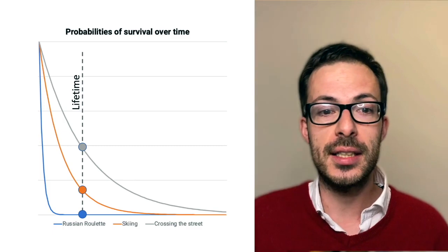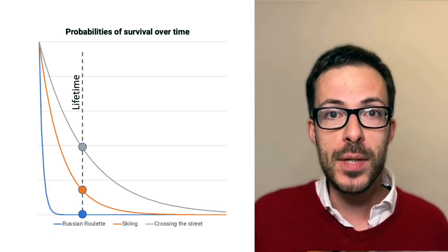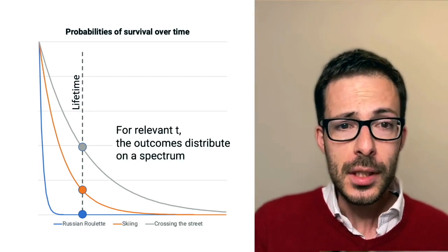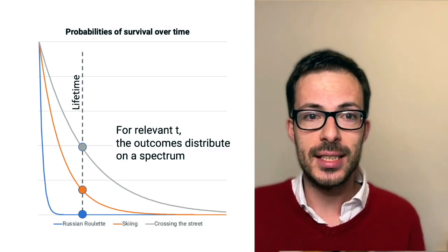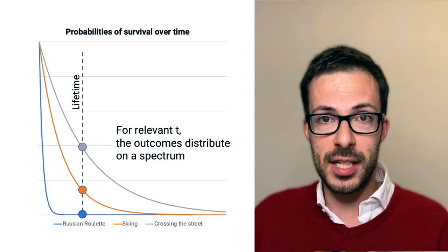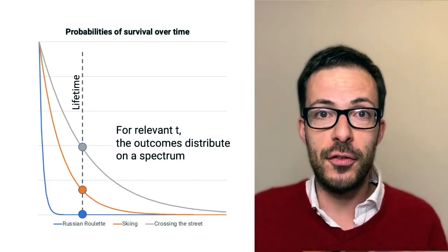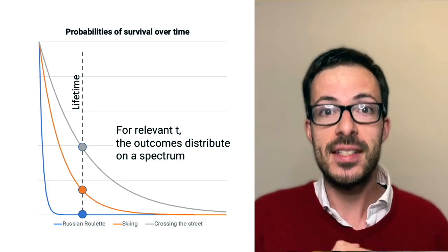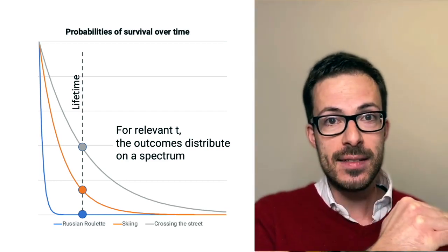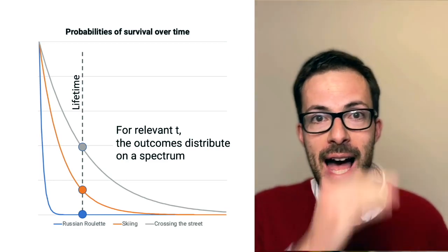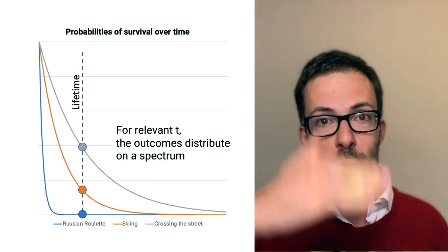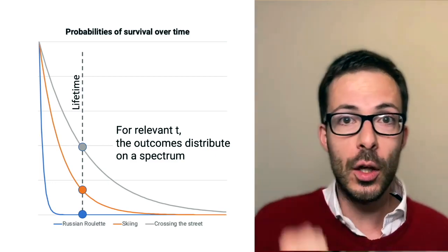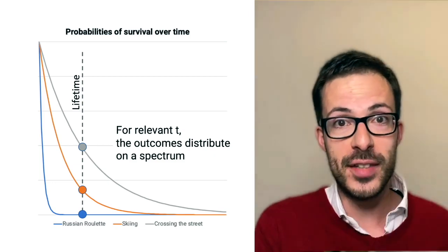And crossing the street, that's way more ergodic than skiing and playing Russian roulette, because most people, over a lifetime, they do not suffer any incident by crossing the street. So, what we can see from this chart is that for relevant time frames, relevant for the practical life of people, for example, a lifetime or a career or the duration of investment, outcomes distribute on a spectrum. It's not like either zero or the same outcome that you would have for many people playing the activity once. But instead, we get a spectrum of outcomes. For some activities, the outcome would be quite close to the population average. And for other activities, it would be very far off.